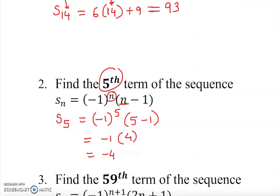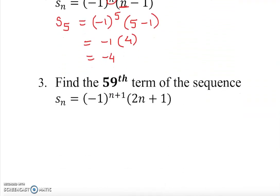Let's take a look at the next one here. The next one is basically the same concept. So we do s sub 59 is equal to negative 1 to the power 59 plus 1, open parentheses, 2 times 59.